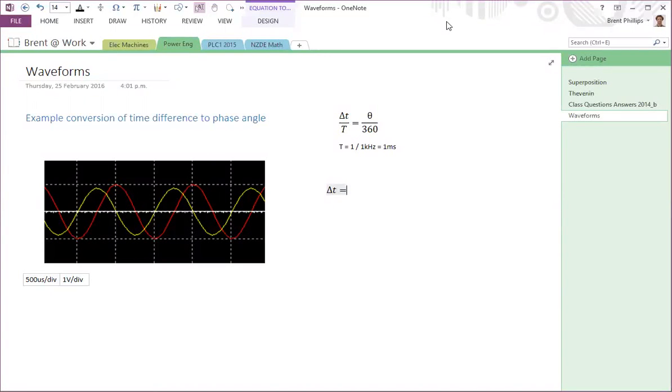Here's a little explanation about what we need to do when we're looking at waveforms and we want to find the phase angle between them. We've got here a couple of waves and the scale measurements for that oscilloscope reading.